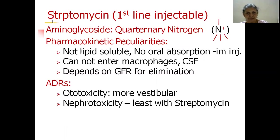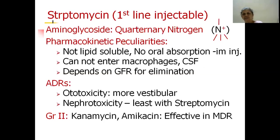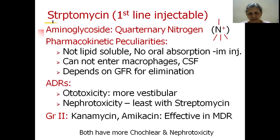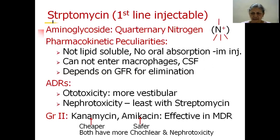Common adverse effects of the aminoglycoside group — ototoxicity and nephrotoxicity — are shared by streptomycin, though it is the least nephrotoxic of all aminoglycosides. Among ototoxicity types, it has more vestibular toxicity than cochlear toxicity. The Group 2 agents also include two more aminoglycosides — kanamycin and amikacin — used for multiple drug-resistant tuberculosis. Both have more cochlear damage than vestibular damage and are more nephrotoxic than streptomycin. Kanamycin is cheaper and included in regular MDR-TB regimens by RNTCP; amikacin is safer but costlier.